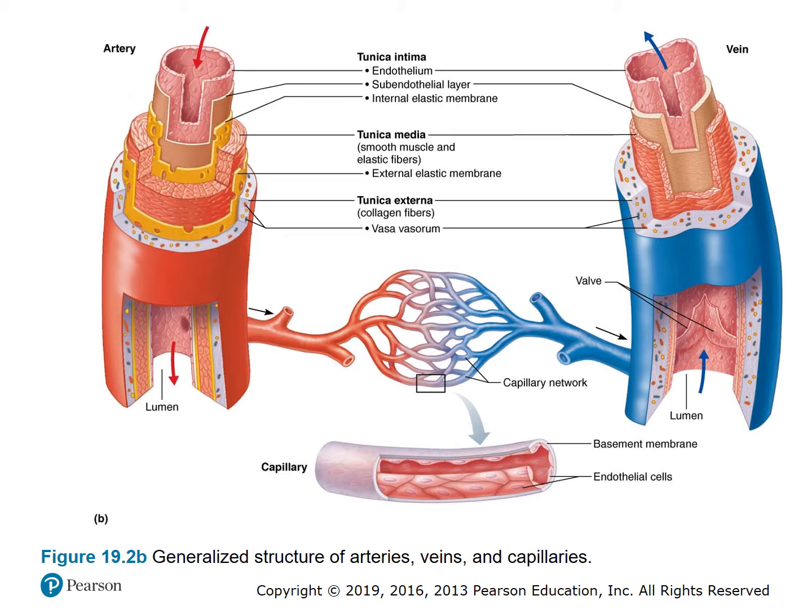The tunica intima has the endothelial layer, sub-endothelial layer, and internal elastic membrane. The tunica media is made up of smooth muscle and elastic fibers with an external elastic membrane. The tunica externa consists of collagen fibers. Then we see the vasa vasorum.